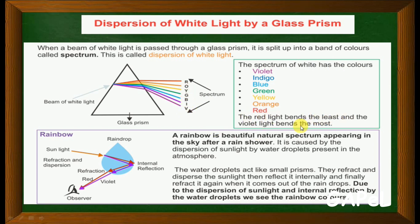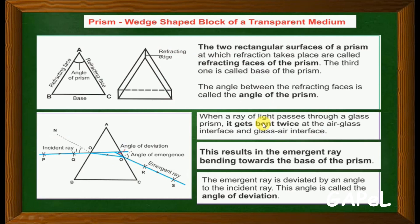The red light bends the least and the violet light bends the most. This is very important. In white light, red bends the least where violet bends the most. The angle of deviation - this is your violet and this is your normal. Red will be somewhere here, so the angle between the red and normal will be very less compared to the angle between the normal and the violet light.